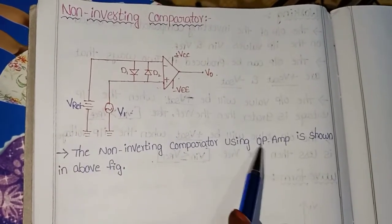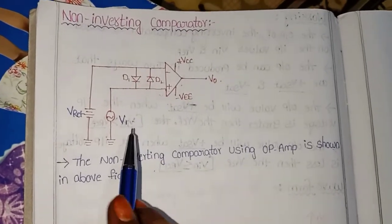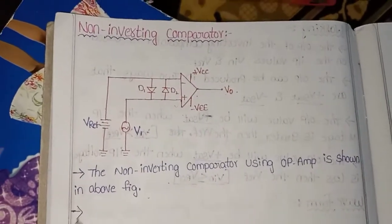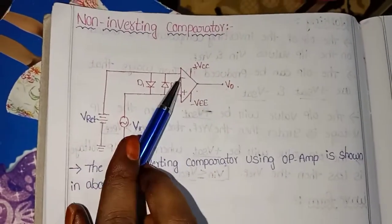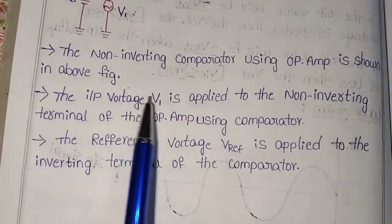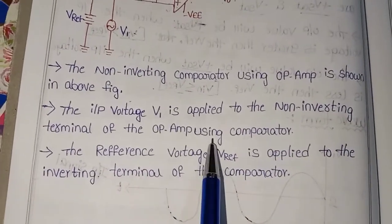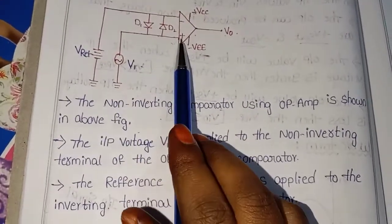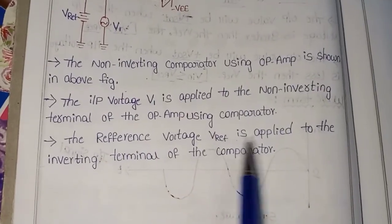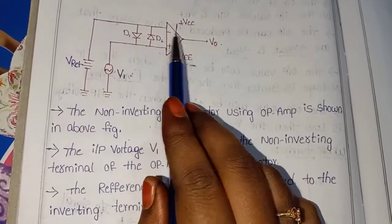First point: the non-inverting comparator using op-amp is shown in the above figure. The input voltage V1 is applied to the non-inverting terminal of the op-amp comparator. Next, the reference voltage V-reference is applied to the inverting terminal of the comparator.